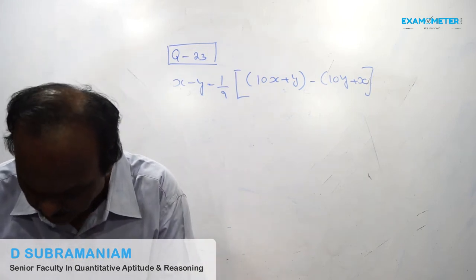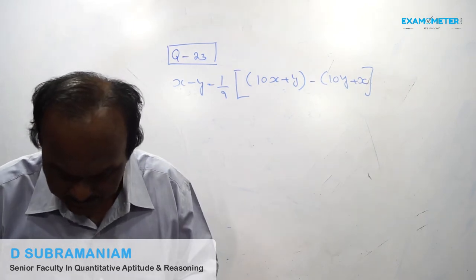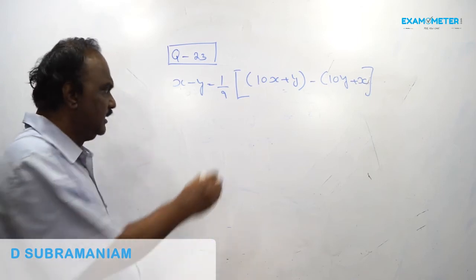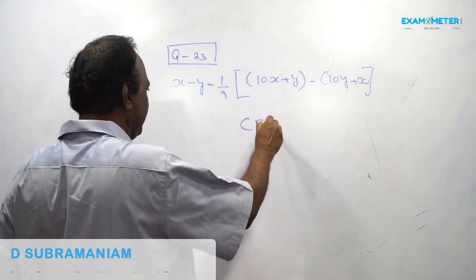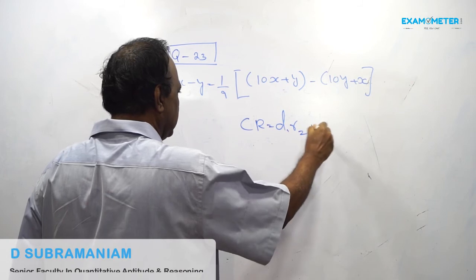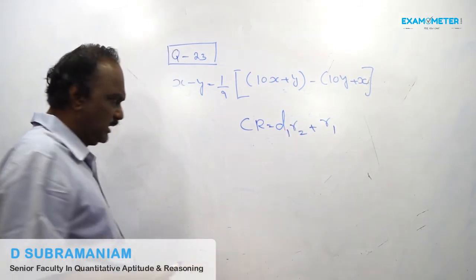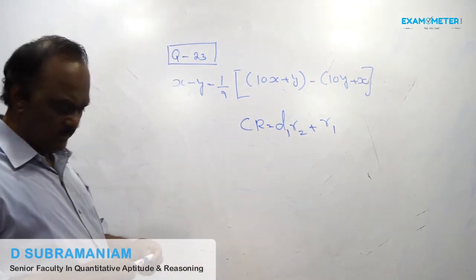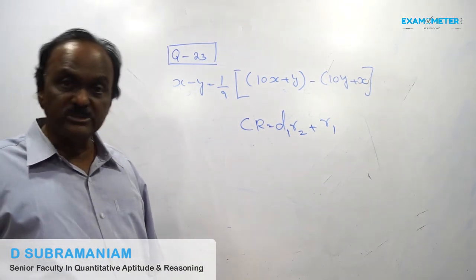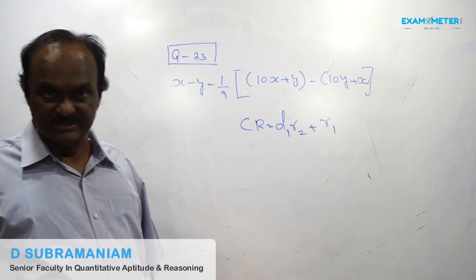Now write down the formula. For two divisors, complete remainder (CR) = D1 × R2 + R1. If there are 3 divisors D1, D2, D3 and 3 remainders R1, R2, R3, the formula extends accordingly.